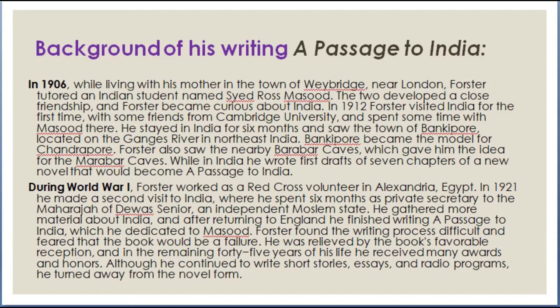While in India he wrote the first drafts of seven chapters of a new novel that would become A Passage to India. During the First World War, Forster worked as a Red Cross volunteer in Alexandria, Egypt. In 1921, he made a second visit to India, where he spent six months as private secretary to the Maharaja of Dewas Senior, an independent Muslim state. He gathered more material about India, and after returning to England, he finished writing A Passage to India, which he dedicated to Masood.